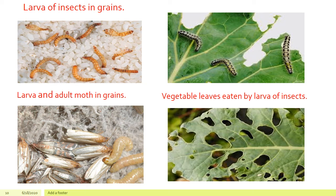So now children, you have seen the whole four stages in the life cycle of a butterfly. It is the same in the moth too, but the only thing is that they look different.